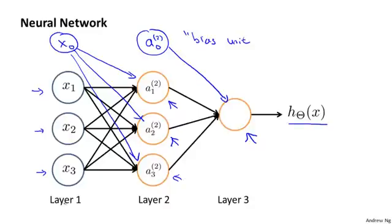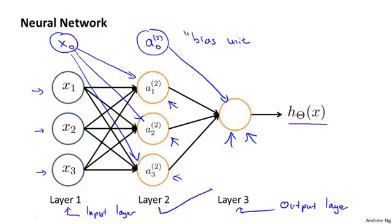To introduce a bit more terminology, in a neural network, the first layer is also called the input layer because this is where we input our features x1, x2, x3. The final layer is also called the output layer because that layer has the neuron that outputs the final value computed by a hypothesis. And then layer two in between is called the hidden layer.